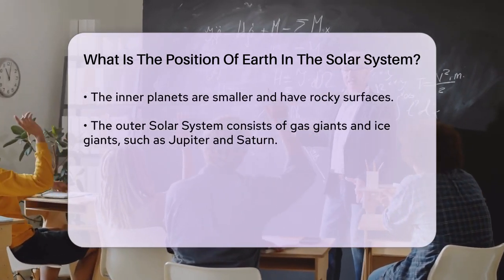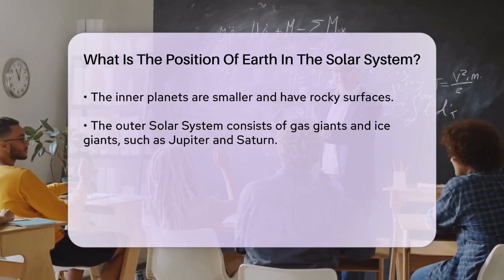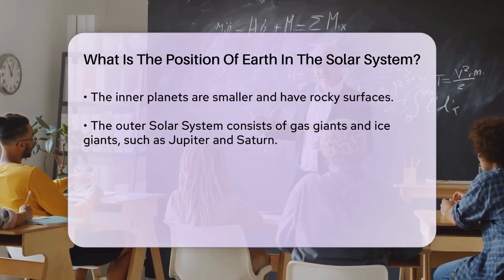The inner solar system is distinct from the outer solar system, which includes the gas giants and ice giants like Jupiter, Saturn, Uranus, and Neptune.